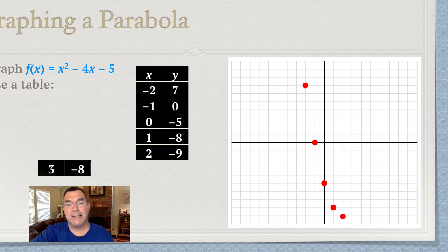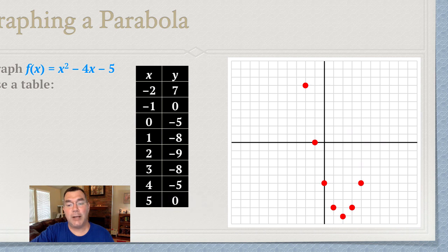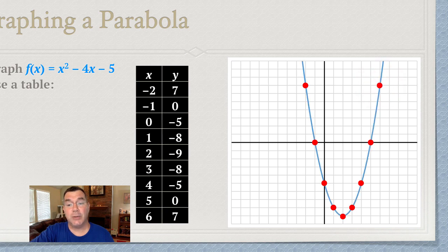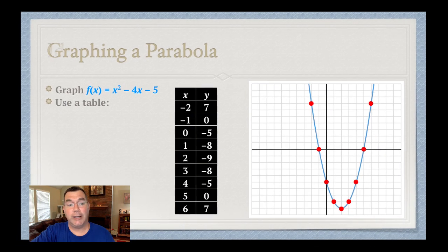So I want to see things like the vertex, whereabouts the vertex is, where the x intercepts would be, where the y intercepts would be. And once I have enough points, then I can join them with a curve, as you see right there. So now I know where it is.